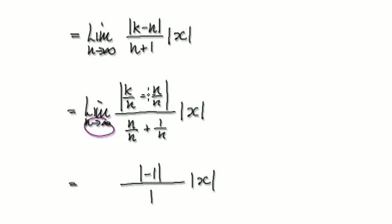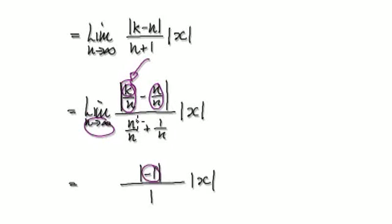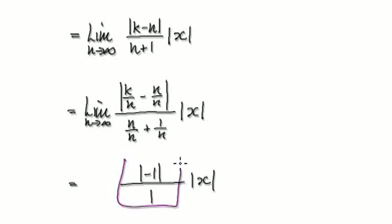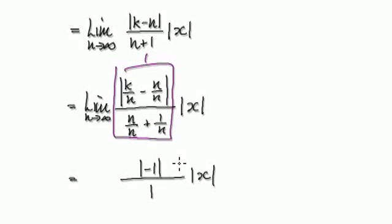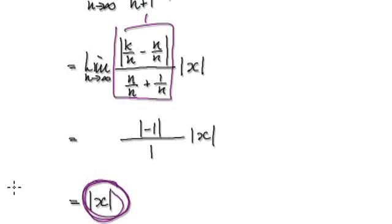As N heads towards infinity, K is a finite, fixed number. Then this is going to head towards zero. And then you've got zero take away one, so that would be negative one. And then this will be one, and this will be zero. So the absolute of negative one is one — this whole thing here will be one. So as N heads towards infinity, this whole thing will be one. So that limit of |a_{n+1} / a_n| equals this thing here.